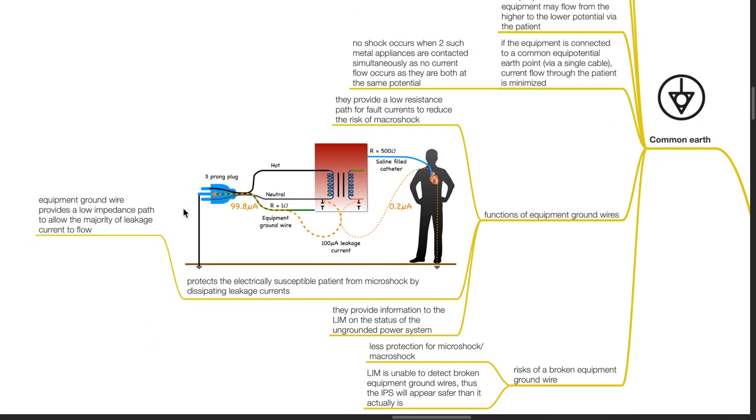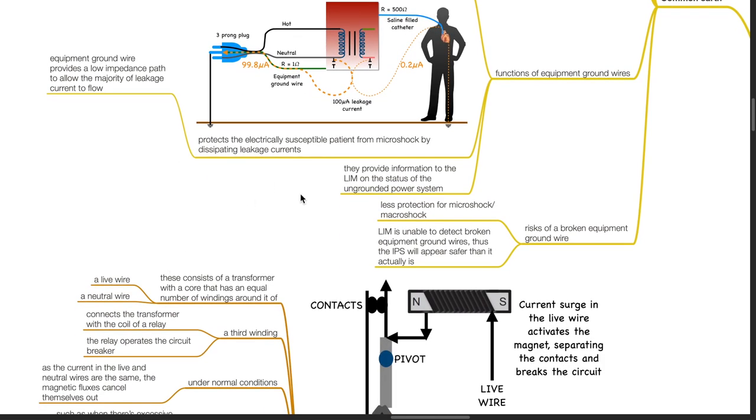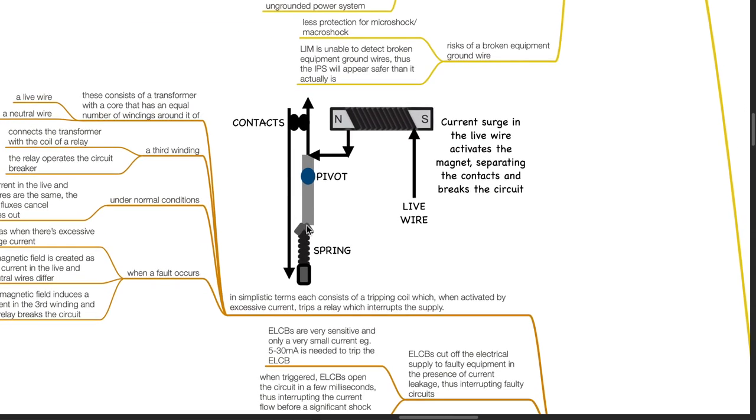Functions of equipment ground wires: They provide a low resistance path for fault currents to reduce the risk of macroshock. They protect the electrically susceptible patient from microshock by dissipating leakage currents. Equipment ground wire provides a low impedance path to allow the majority of leakage current to flow. They provide information to the LIM on the status of the ungrounded power system. Risk of a broken equipment ground wire: There will be less protection for micro and macroshock. LIM is unable to detect broken equipment ground wires, thus the IPS will appear safer than it actually is.